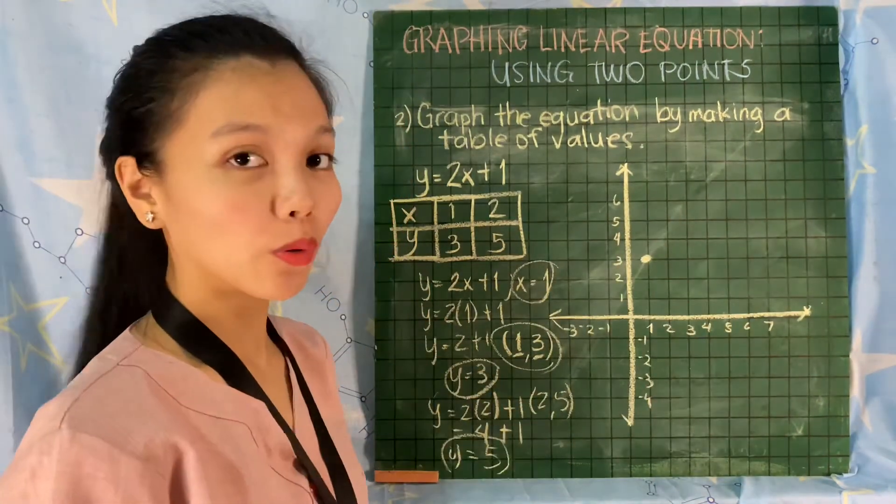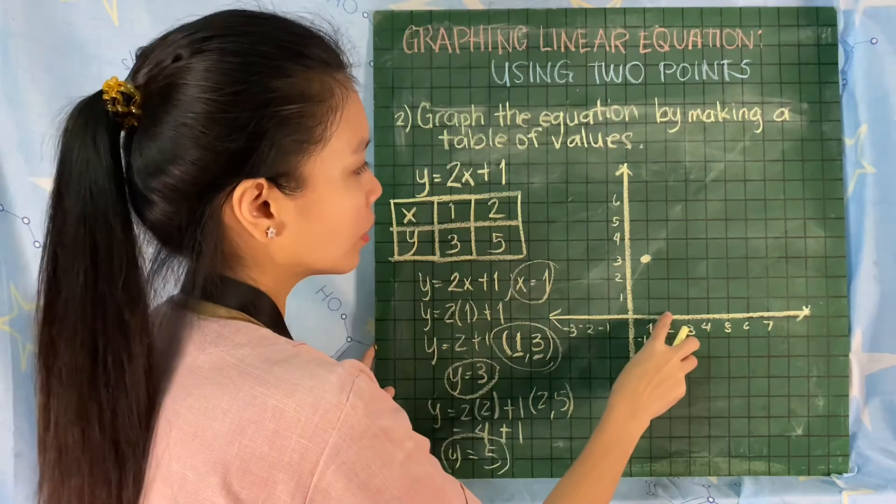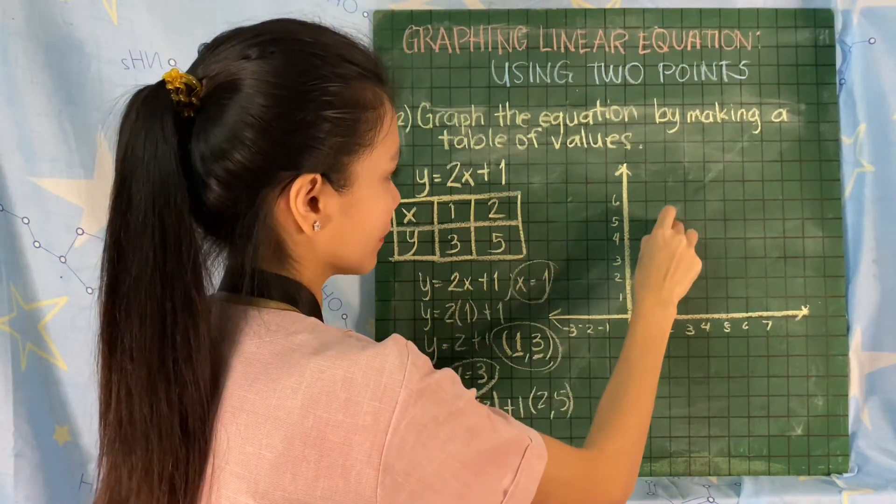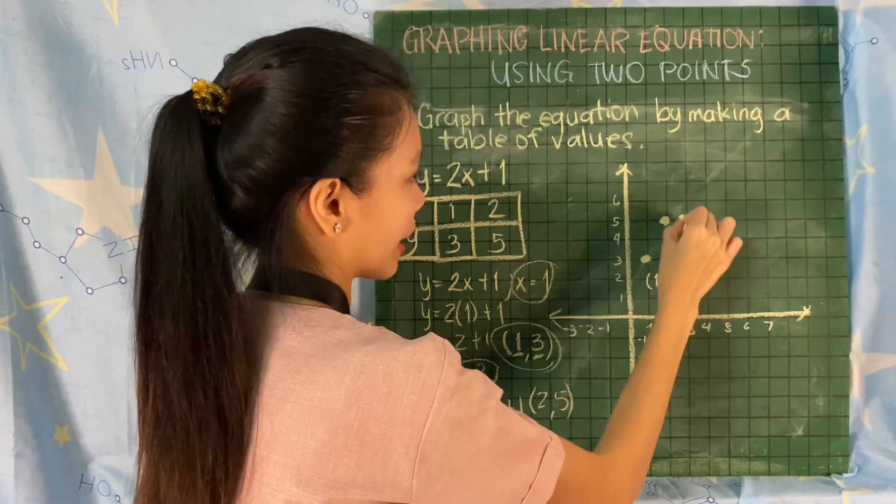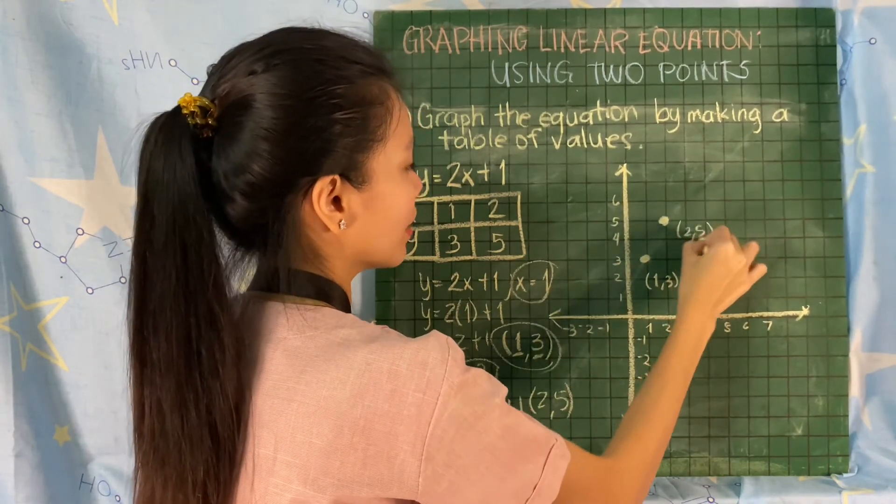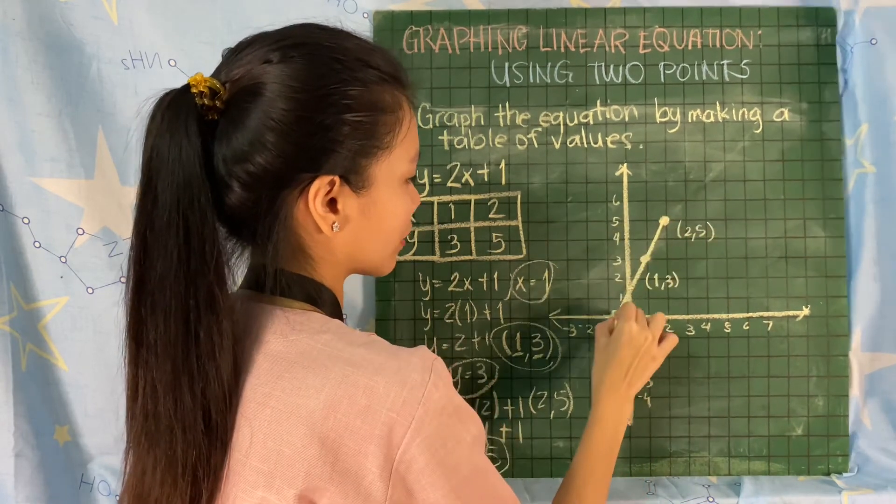Then the second one is (2, 5). So 2, then 5. There it is. This is (1, 3) and this is (2, 5). Connect the points. We are going to form a straight line.